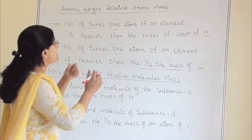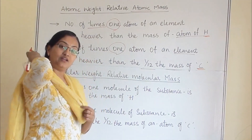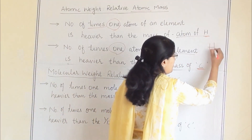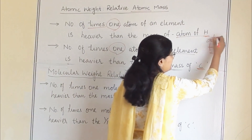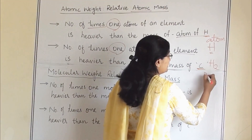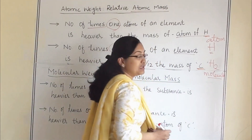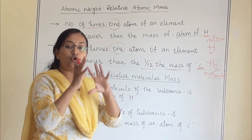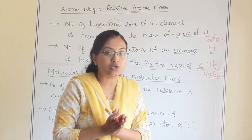Now we have discussed atoms. How are atoms and molecules different? If you are talking about hydrogen, that is an atom. If you are talking about H₂, that is a molecule. So many atoms combine together to make one molecule — that is the basic difference between atom and molecule.